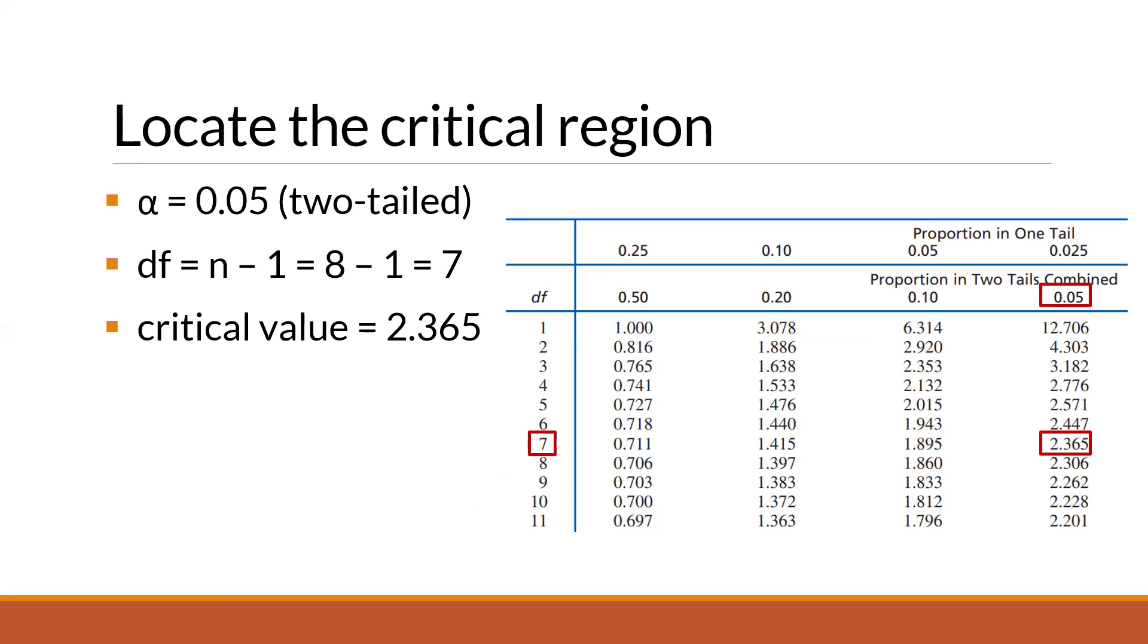So to determine the critical value, you need to know the alpha level and the degrees of freedom. So in this case, we have eight dogs, and to get the degrees of freedom in one sample t-test, that is n minus 1. So in this case, 8 minus 1 is equal to 7. And since our alpha level is 0.05, our critical value is 2.365. So we will compare the value of the t that we will get later with this value to know if there is a significant difference between black dogs and all dogs.